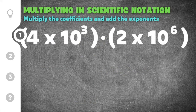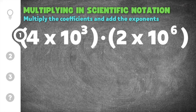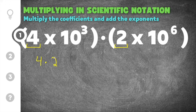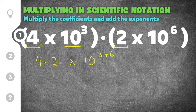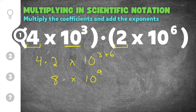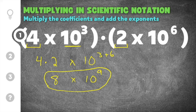Let's get started on our first practice problem: 4 times 10 to the 3rd times 2 times 10 to the 6th. We multiply the coefficients — 4 times 2 — and add the exponents: 3 plus 6. That gives us 8 times 10 to the 9th. We check that 8 is between 1 and 10, and it is. So 4×10³ × 2×10⁶ = 8×10⁹.